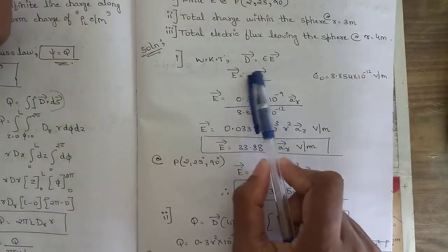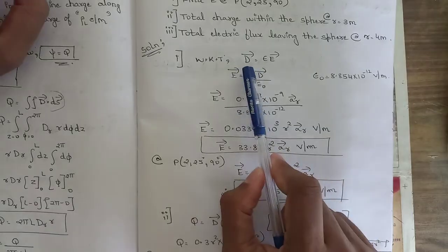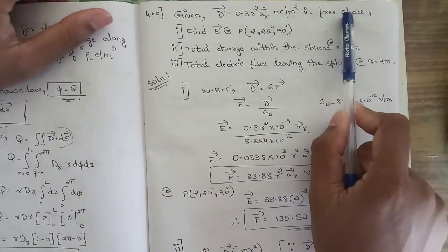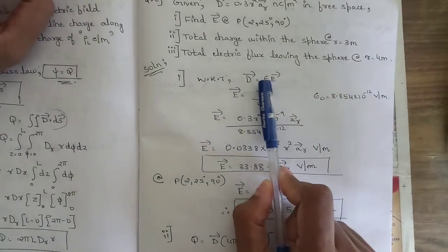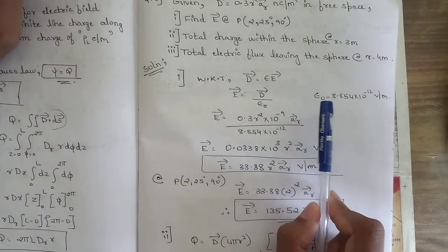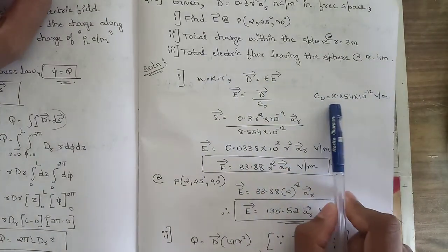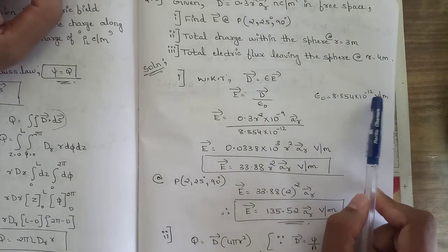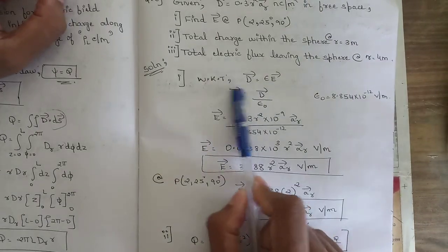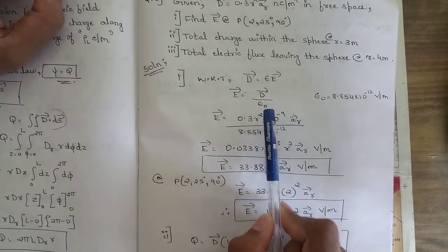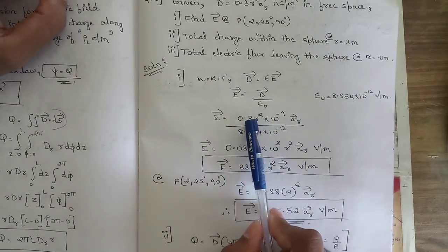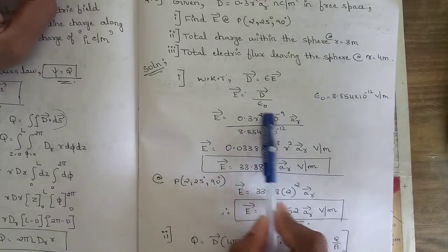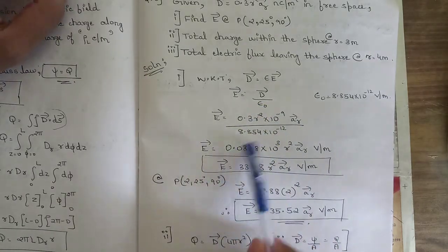For the first sub-case, we have the relationship D = ε · E. Since the question mentions free space, we take ε = ε₀, that is absolute permittivity, whose value is 8.854 × 10⁻¹² volts per meter. Therefore from this relation, E = D / ε₀, so the value of D is 0.3r² × 10⁻⁹ aᵣ vector divided by ε₀.